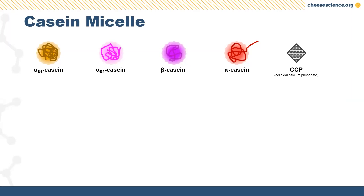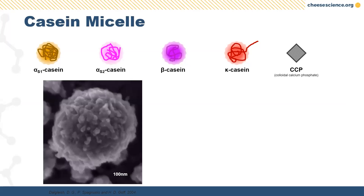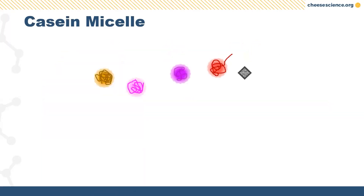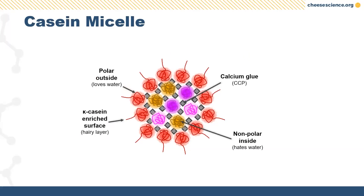Now let's look at what rennet is actually doing in milk. First, let's build a casein micelle to see what's inside. The scale is about 100 nanometers — you need about a thousand of them across a human hair. On the outside are kappa casein 'hairs' that keep micelles from sticking together. Embedded in the middle are all the other casein types — alpha, beta. Holding it all together is calcium, which is really important for all aspects of dairy manufacturing. That hairy outer layer carries a negative charge.